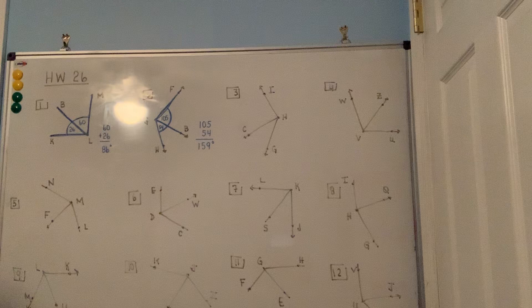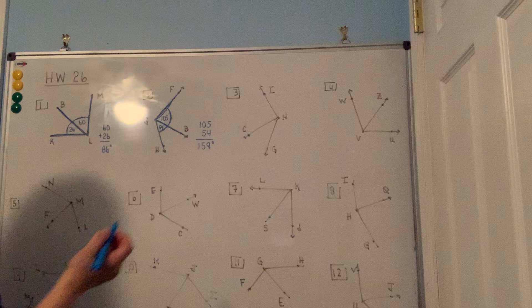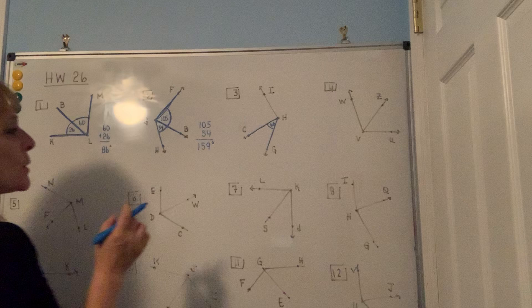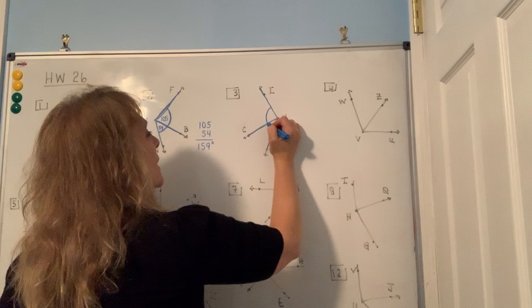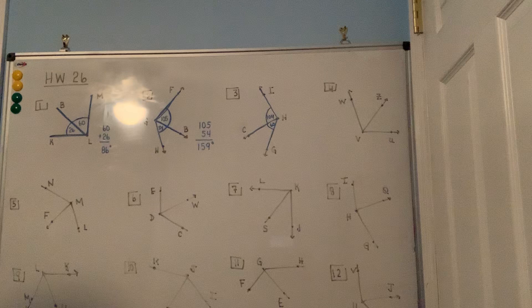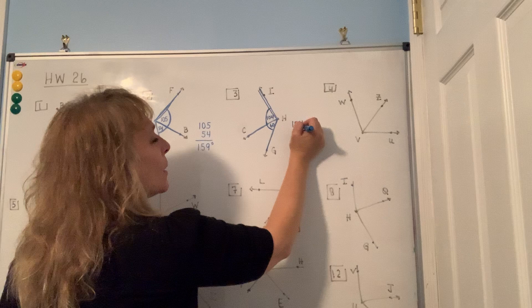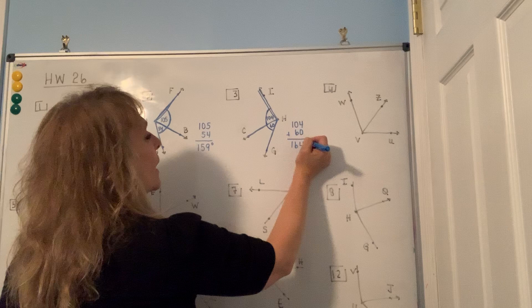Number three: the measure of angle GHC is 60 degrees, and angle CHI is 104 degrees. The question asks for angle GHI, which is the total angle, so you add them together. 104 plus 60 gives you 164 degrees.